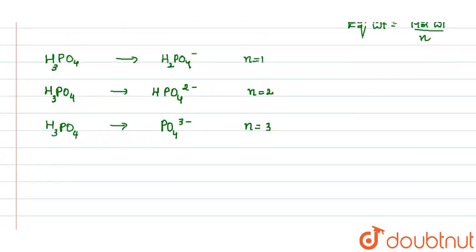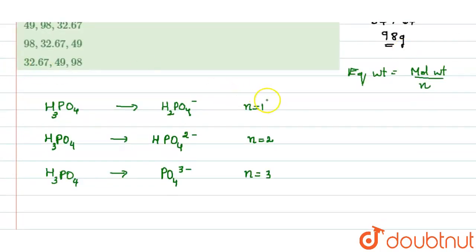So let us see the equivalent mass in every case. In the first case, equivalent weight is molecular weight 98 divided by 1, that is 98. In the second case, n factor is